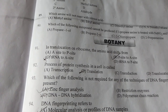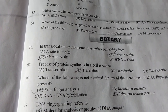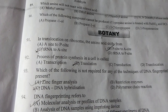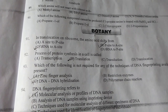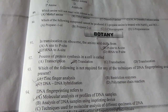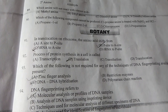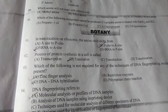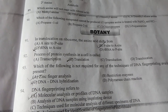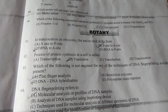Question number 91: In translocation on ribosome, the amino acid shifts from — and B is the correct answer. Question number 92: The process of protein synthesized in a cell is called — B is the correct answer of question number 92: translation, RNA to protein. Because we know that from DNA to RNA is transcription, and RNA to protein is called translation.